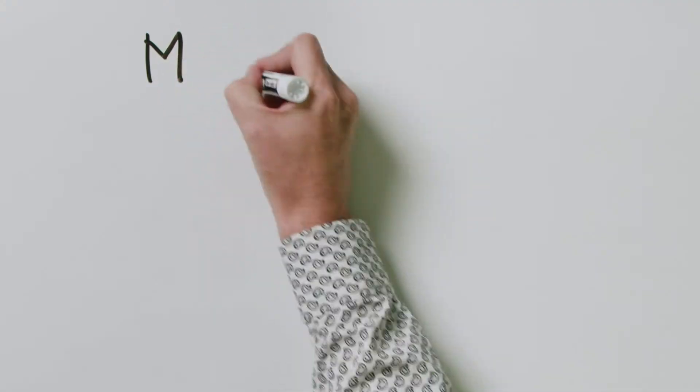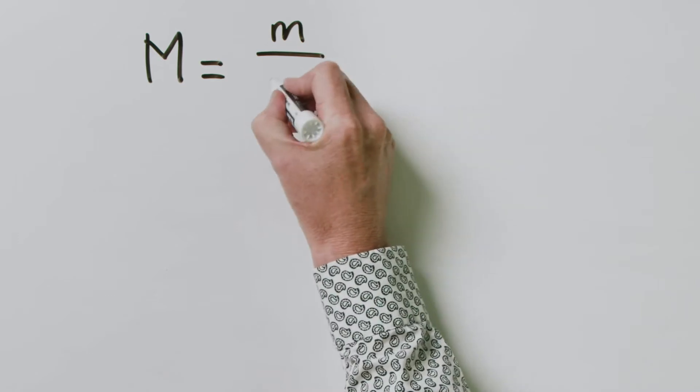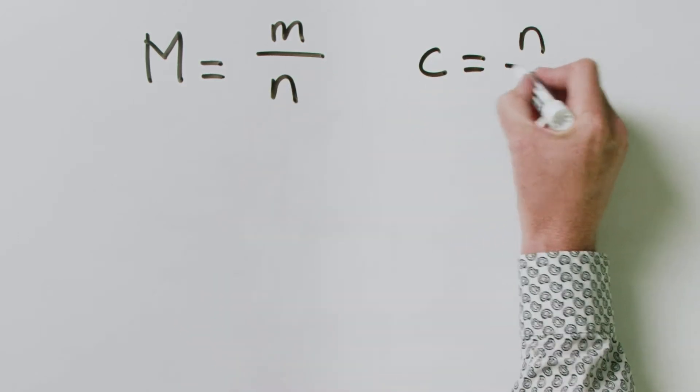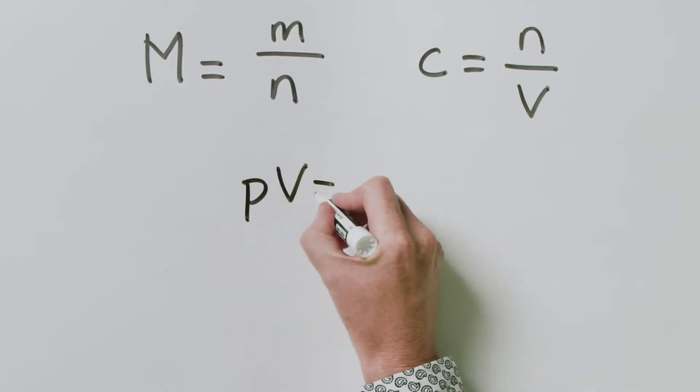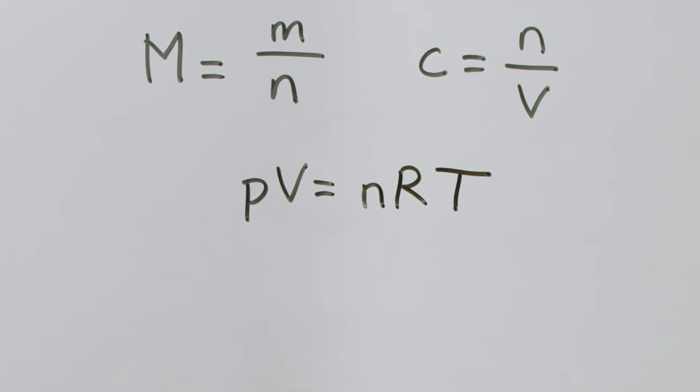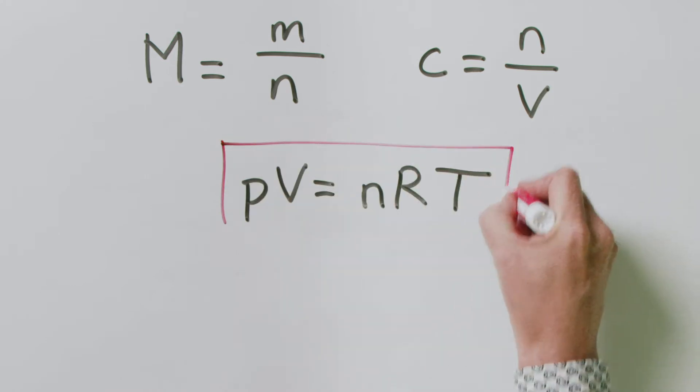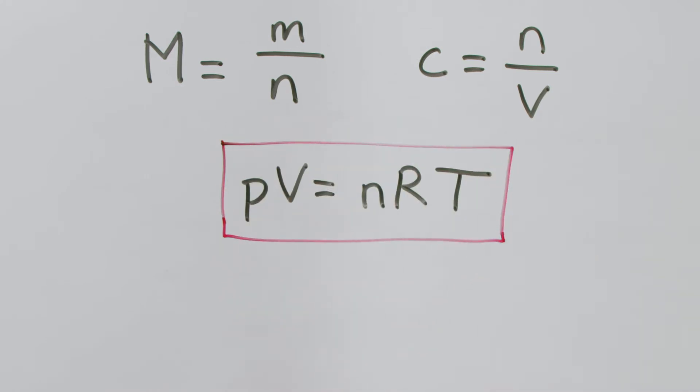If you've seen videos on this channel related to stoichiometry, you know I often say you only need two equations to do 99% of stoichiometry problems: M = m/n and c = n/v. These relate to stoichiometry because they both contain n, the number of moles. There is a third equation, not used as widely but important: the ideal gas equation, PV = nRT.